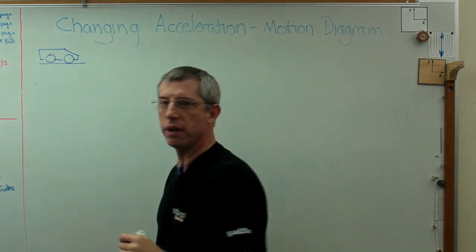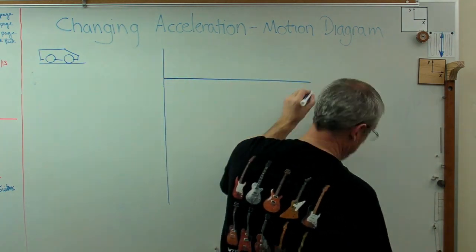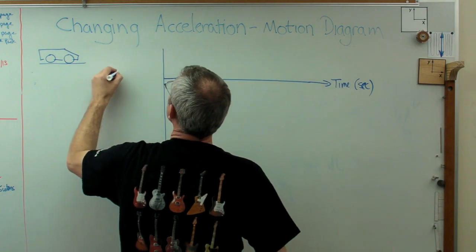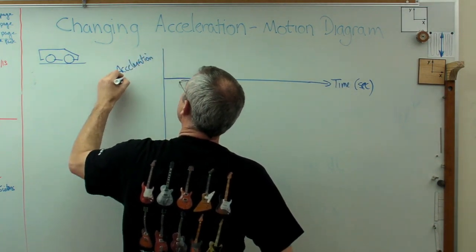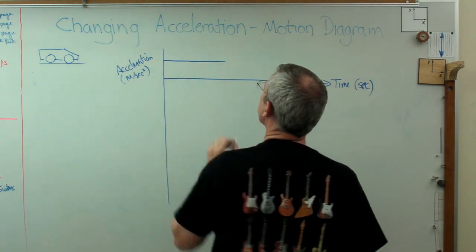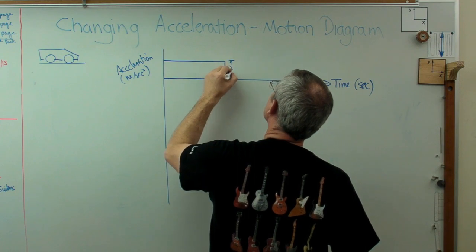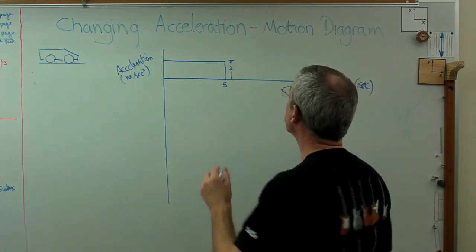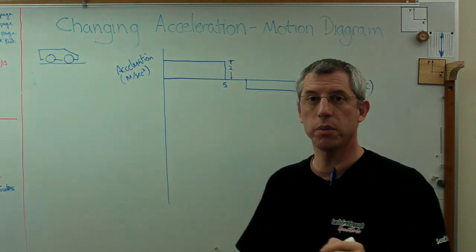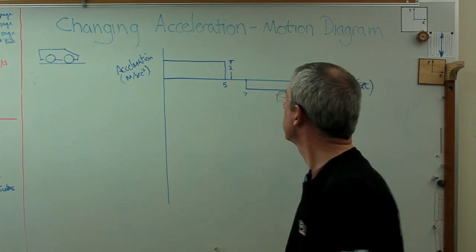Let's say I've got a little cart here — maybe a little race car — something moving along, and it's undergoing acceleration that changes with time. I'll put time on the horizontal axis in seconds and acceleration on the vertical axis in meters per second squared. My little cart undergoes acceleration of 2 m/s² for 5 seconds, then coasts with no acceleration for 2 seconds, then decelerates at minus 1 m/s² for 5 seconds — so the total run is 12 seconds.